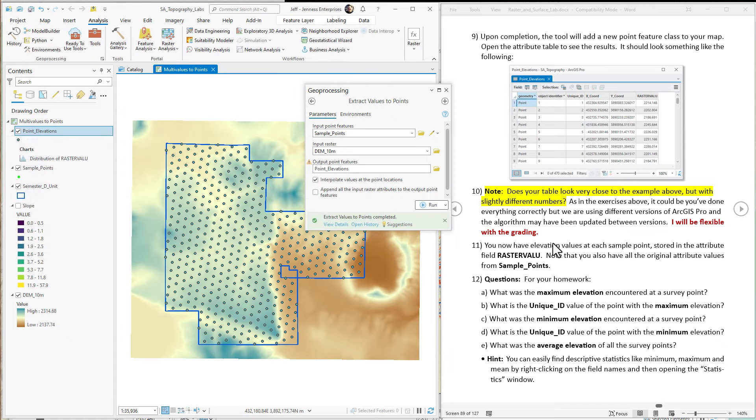All right, so now we want to run it again on the slope values. The tool is still open. It's really easy. We just take the slope here, drag this into the input raster and replace it.